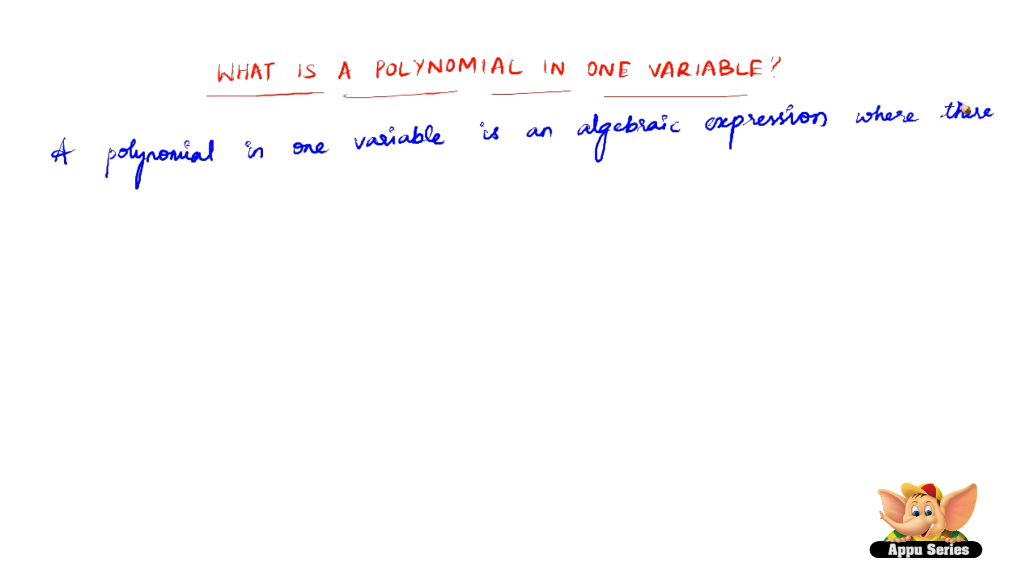Here, let us see what is a polynomial in one variable. A polynomial in one variable is an algebraic expression where there is only one variable present.